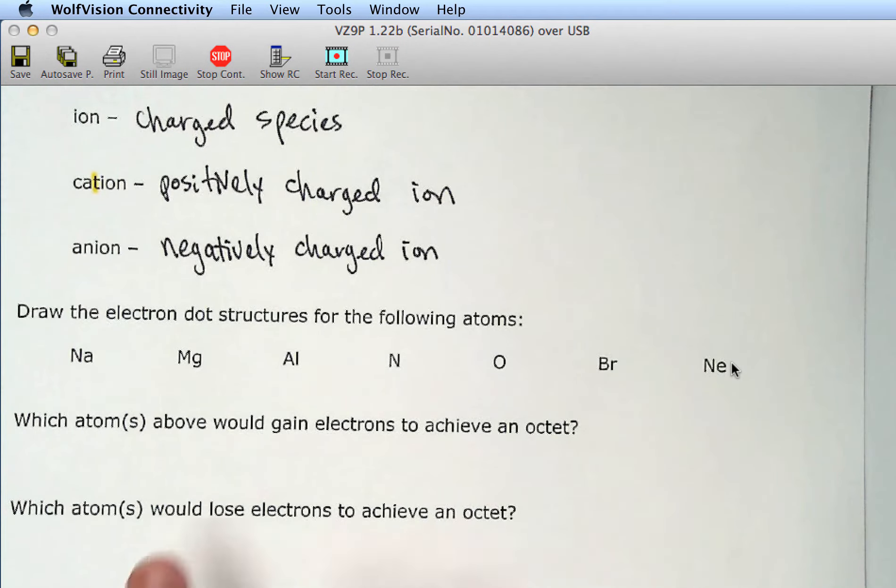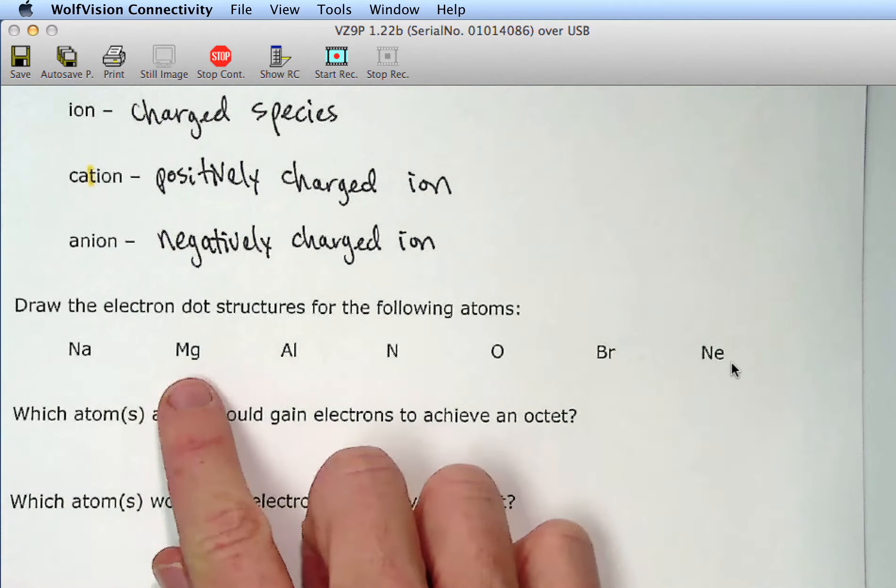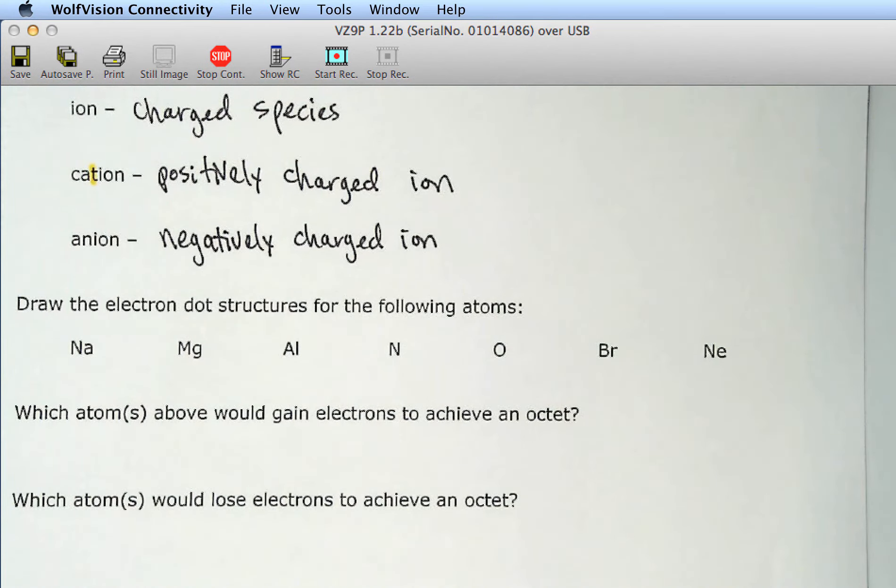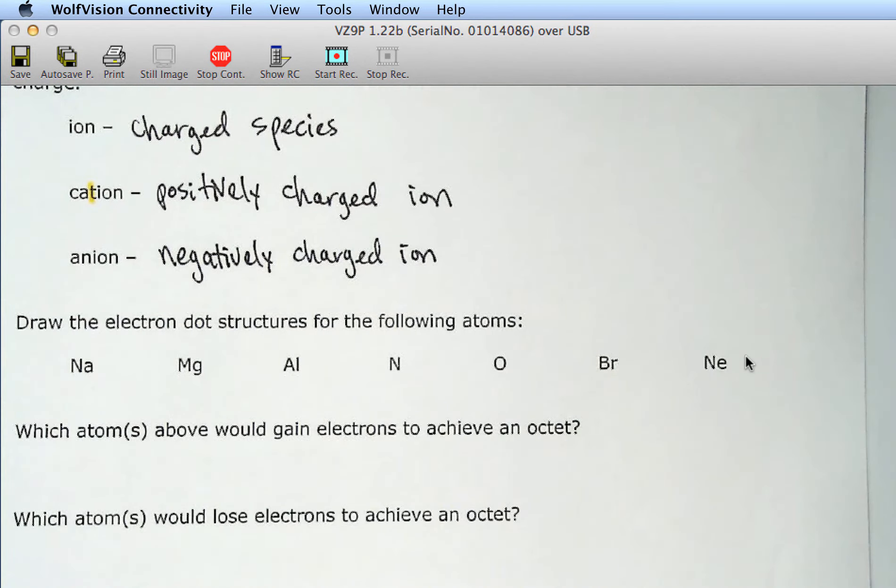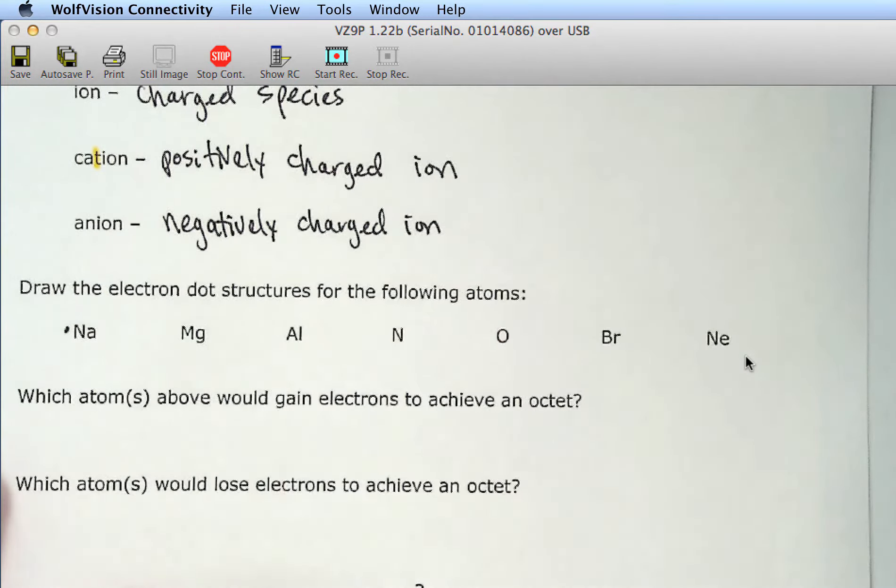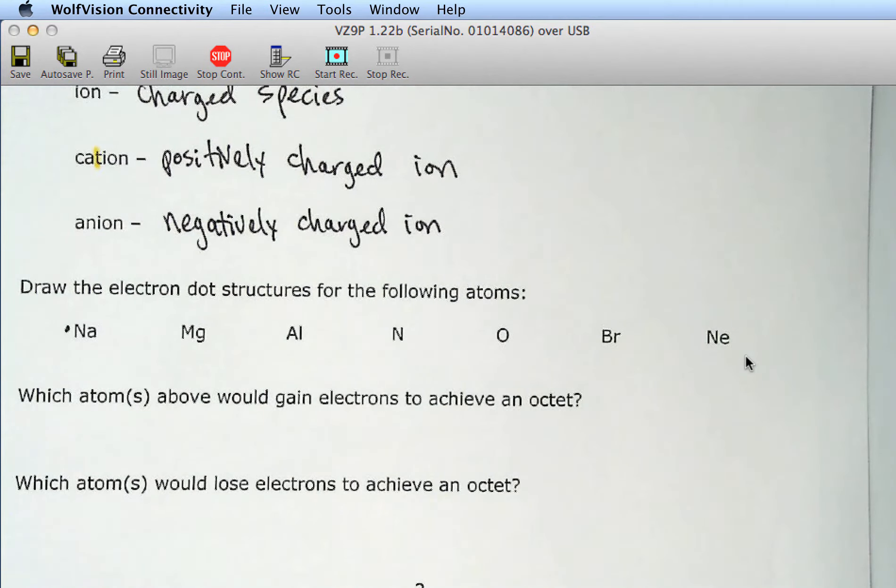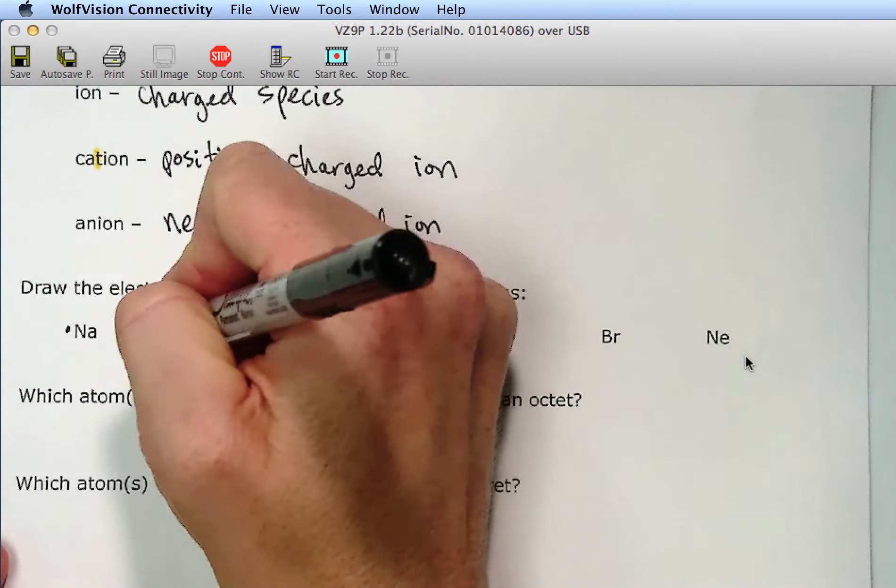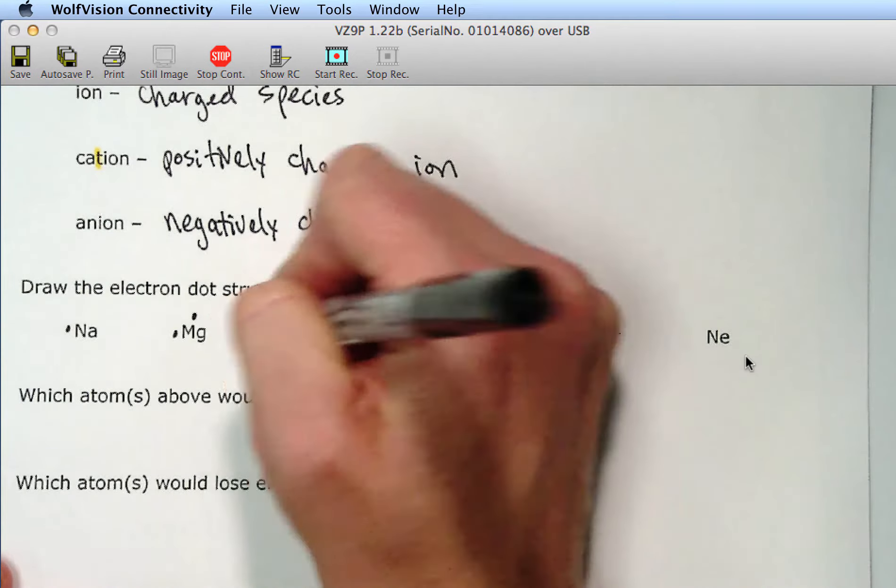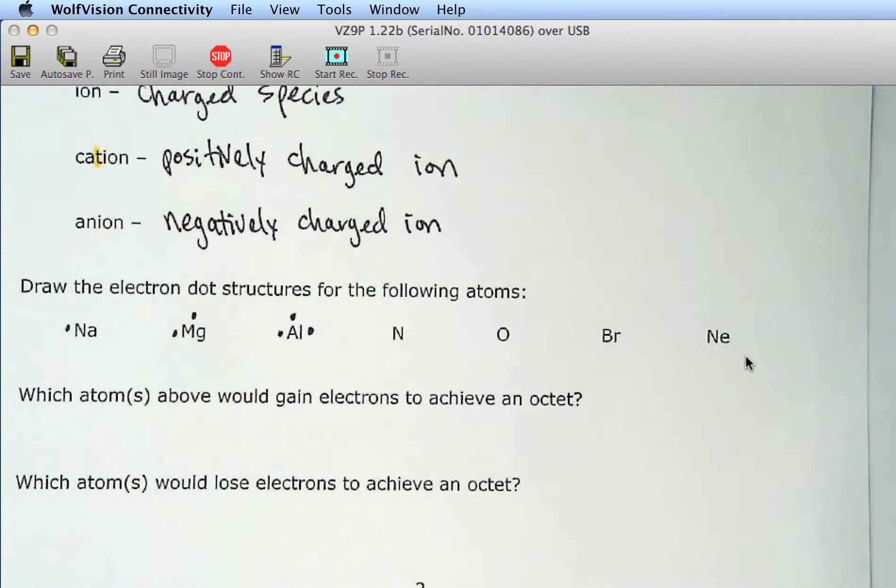So, I want you to take a few minutes here to draw the electron dot structures for sodium, magnesium, aluminum, nitrogen, oxygen, bromine, and neon. So, for sodium, what did you get? One. Magnesium? One thing about these electron dot structures that I didn't mention earlier. Leave the electrons unpaired as long as possible. So, for magnesium, you have the choice of pairing them up, because they're two, or having them unpaired. Have them unpaired. So, aluminum, how many valence electrons in aluminum? Three.